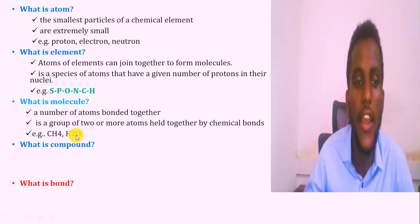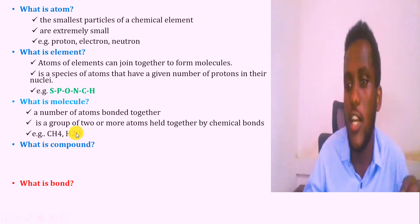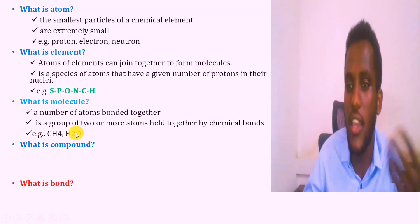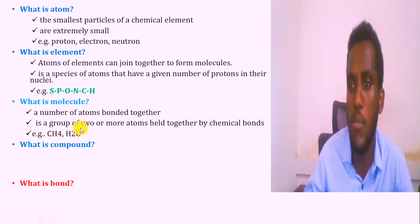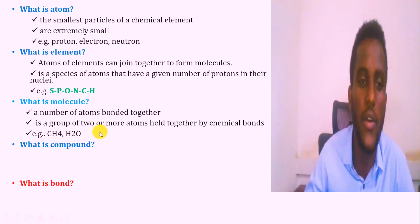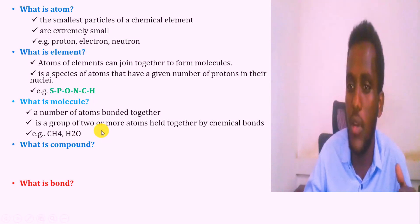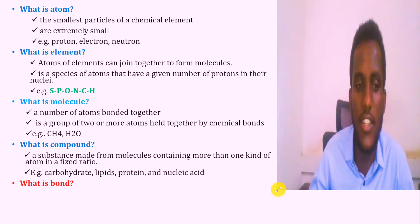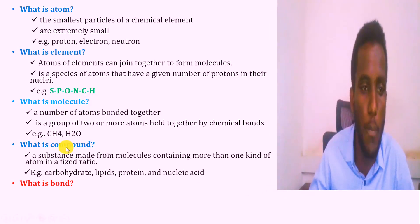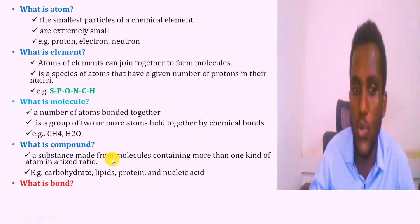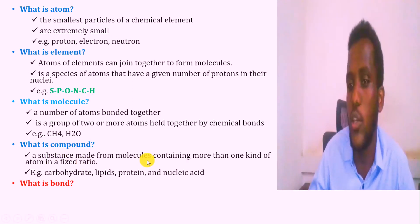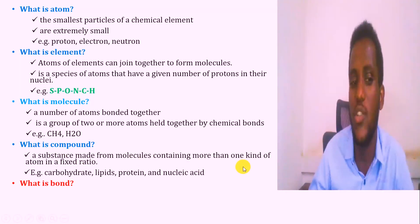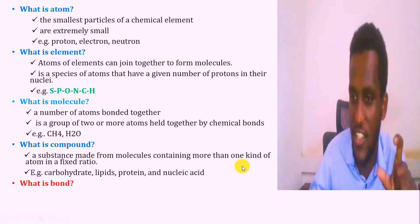When elements are joined together by a chemical bond, they can form molecules. These molecules are then formed as a compound. By definition, a compound is a substance which is made from molecules and contains more than one kind of atom in a fixed ratio.